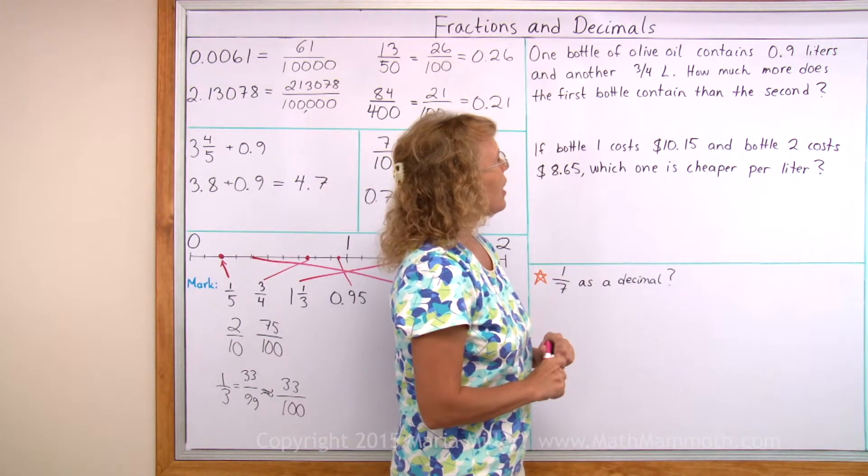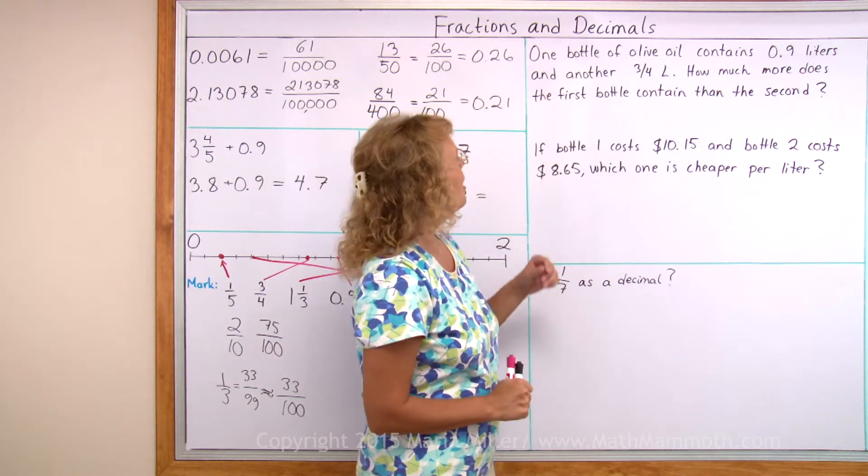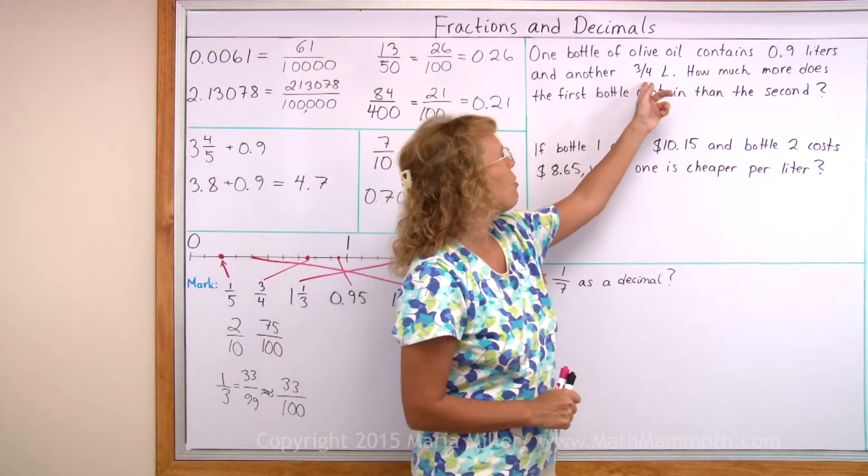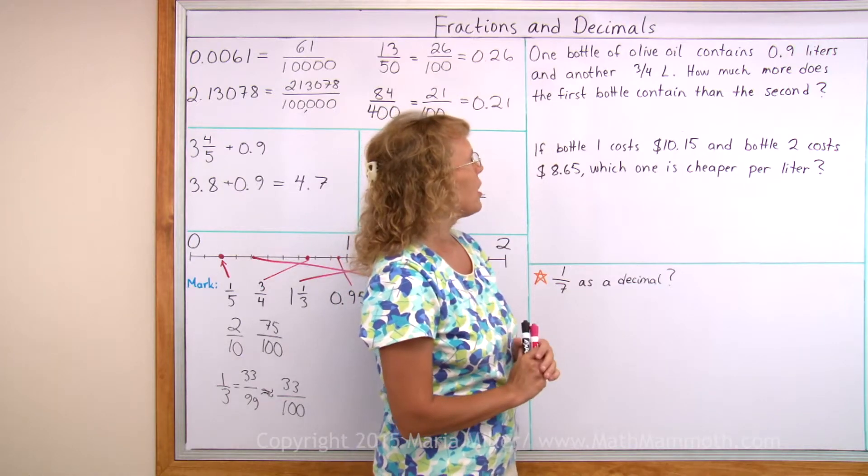One bottle of olive oil contains 0.9 liters, or 9 tenths of a liter, and another contains 3 fourths of a liter of oil. How much more does the first bottle contain than the second?